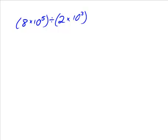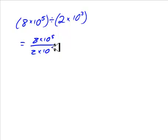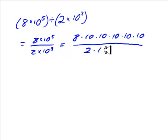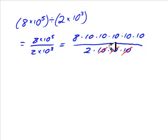Now what about division? Here's a problem: 800,000 divided by 2,000. We're going to rewrite this as 8 times 10 to the 5 over 2 times 10 to the 3. Let's write it all out: 8 times 10 times 10 times 10 times 10 times 10, divided by 2 times 10 multiplied by itself 3 times. Now we have 3 tens on the bottom that cancel 3 tens on the top, because 10 over 10 is 1 and we can ignore that.